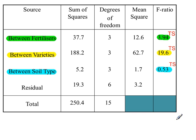The critical value will be the same for each of these factors. So for fertilizers it will be F(3,6). For varieties it's F(3,6). For soil types F(3,6). So we have the same critical value for each of these factors.